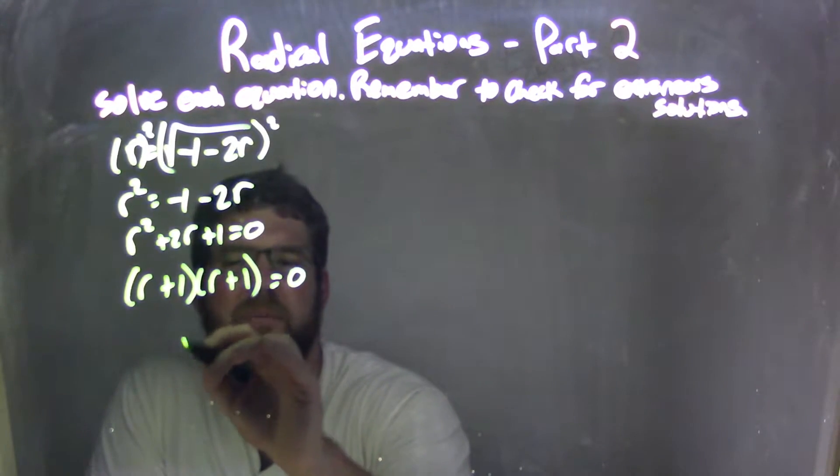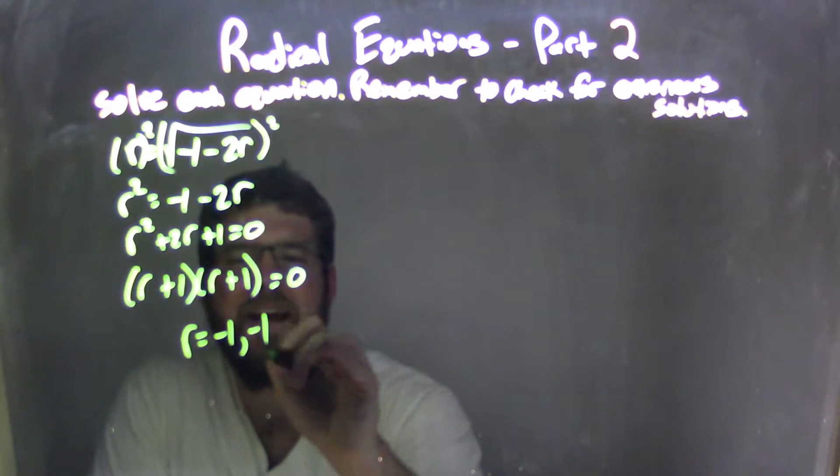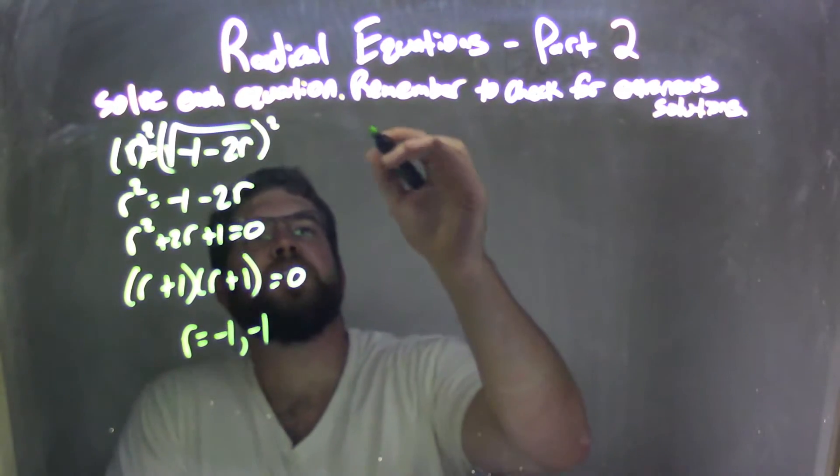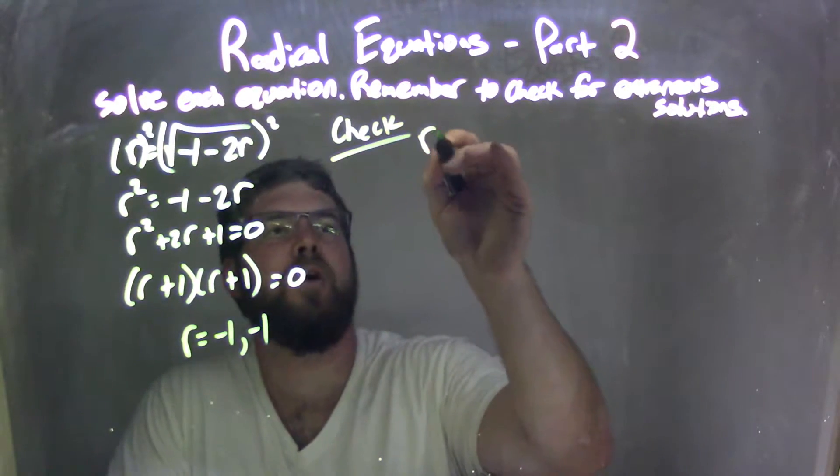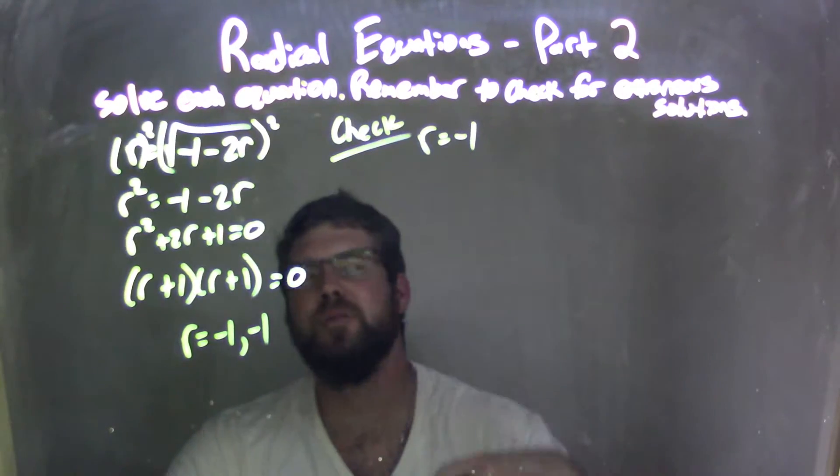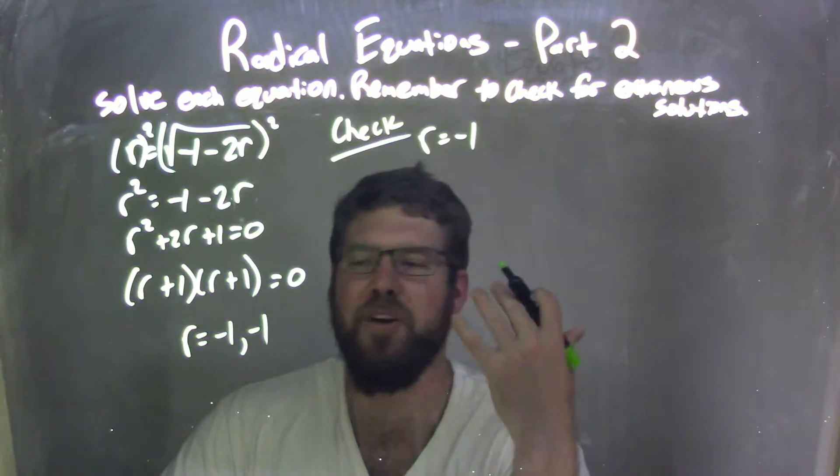Don't need to write both of them, but we set both equal to 0. r equals negative 1 and negative 1. So when we check it here, we only have to check one of them.